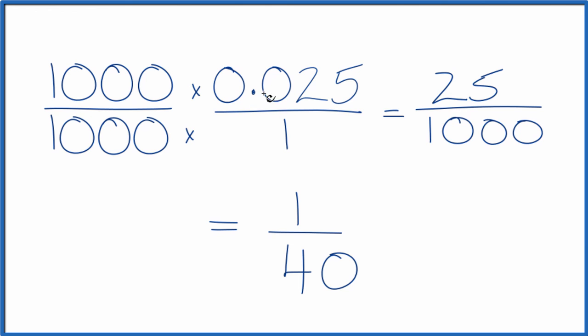That's the same thing as 0.025. They have the same value, just written differently. If you divide 1 by 40, you get 0.025.